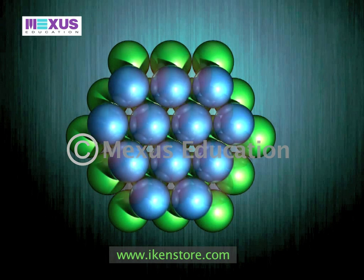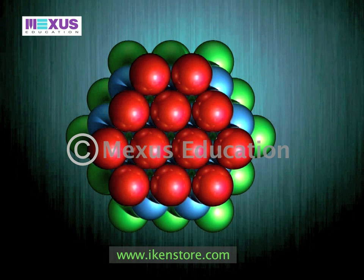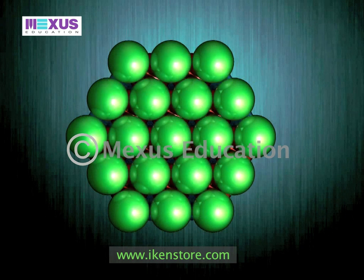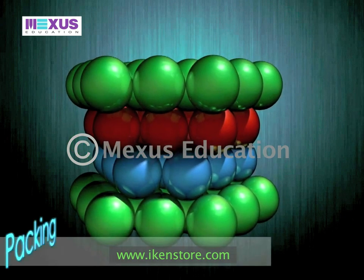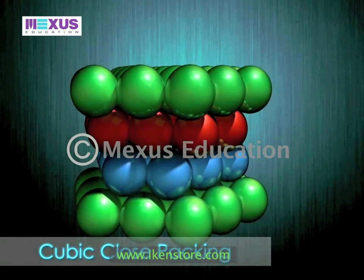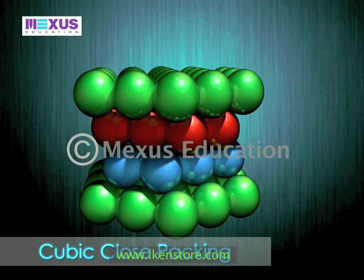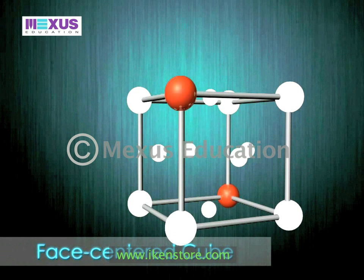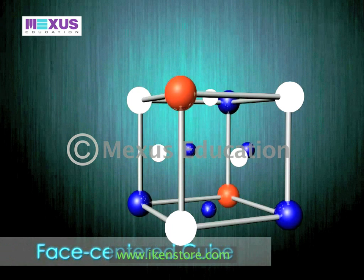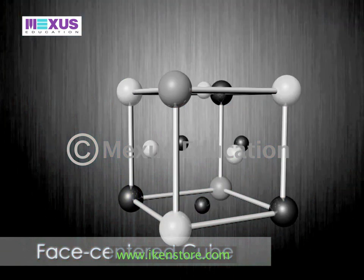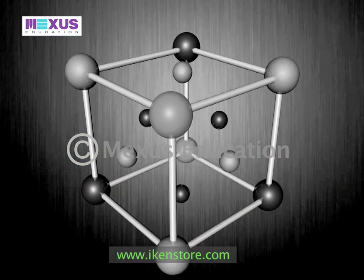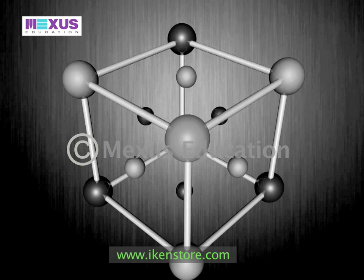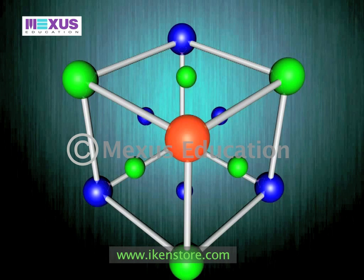Another type of closely packed structure is cubic close packing, or CCP. The layers are stacked such that every third layer is identical; therefore, the sequence of layers is described as ABCABC. The CCP structure is identical to the face-centered cube and is sometimes also known as FCP.